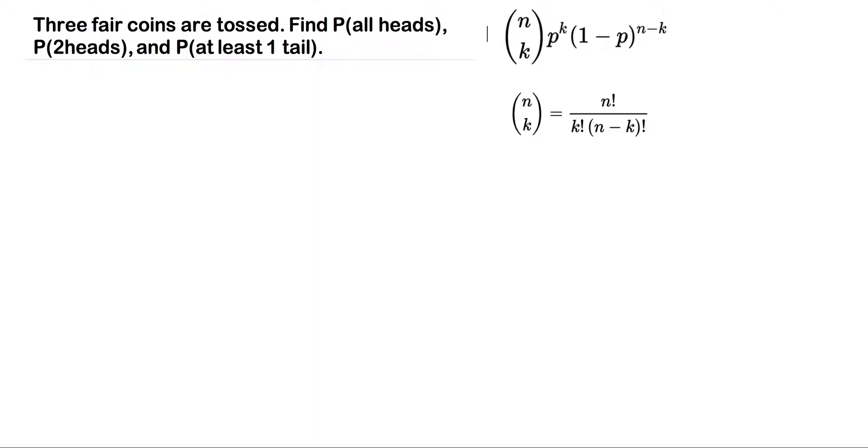Three fair coins are tossed. Find the probability of all heads, find the probability of two heads, and find the probability of at least one tail.